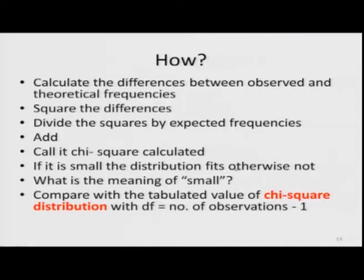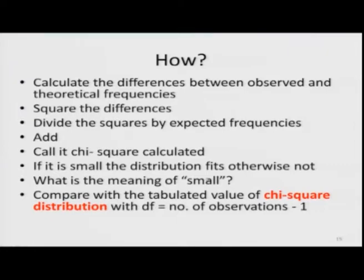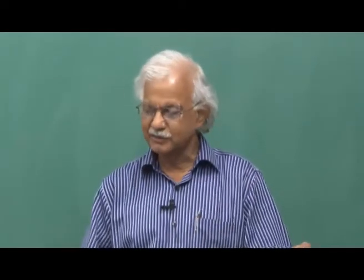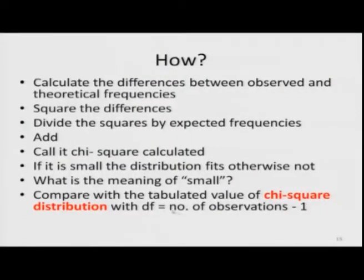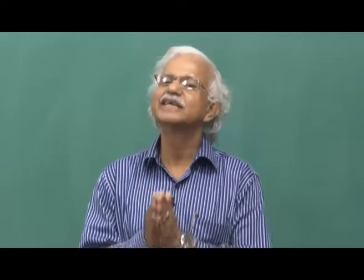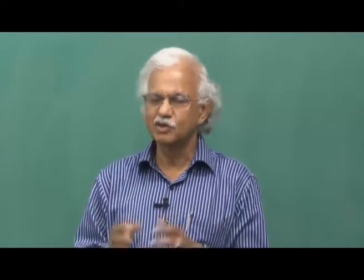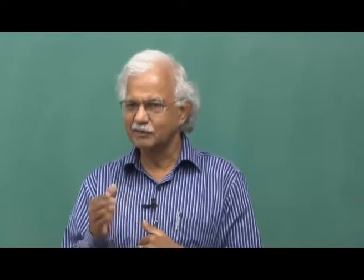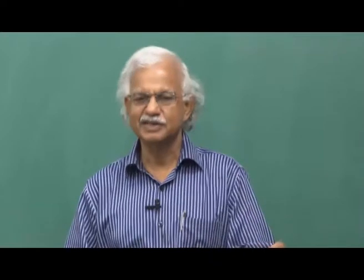In variance we add all the squares and divide by n, but in this goodness-of-fit test we divide the squared differences between observed and expected frequency by the expected frequency and then add them all — this is called chi-square, and gives you the calculated value of chi-square. If it is small you can say the distribution fits; otherwise it does not. For comparison, we use tabulated values of chi-square with degrees of freedom equal to the number of comparisons minus one.